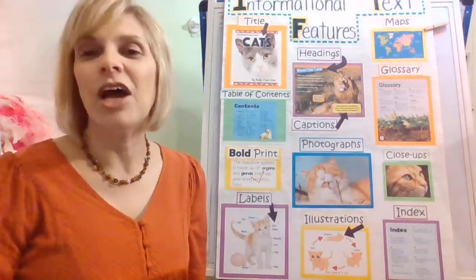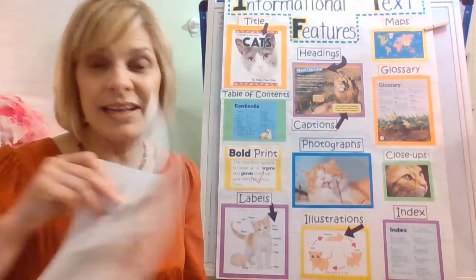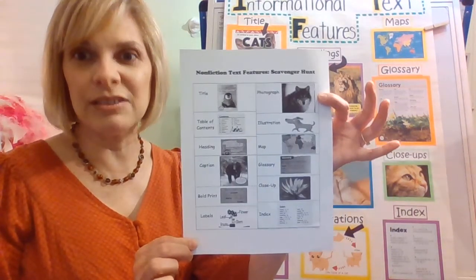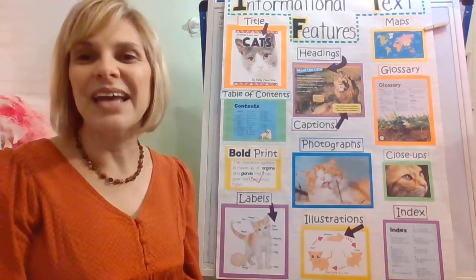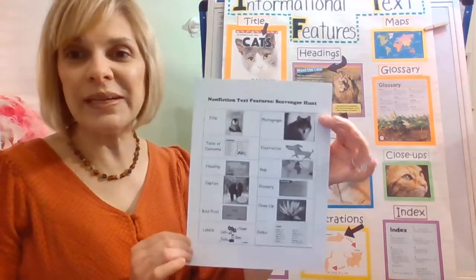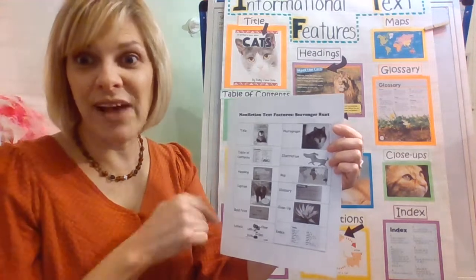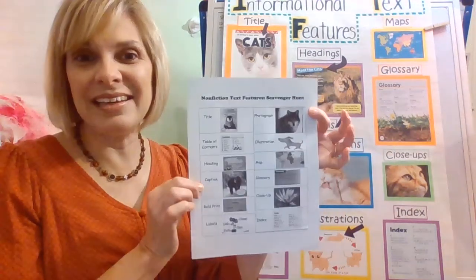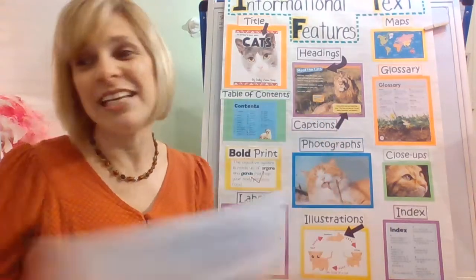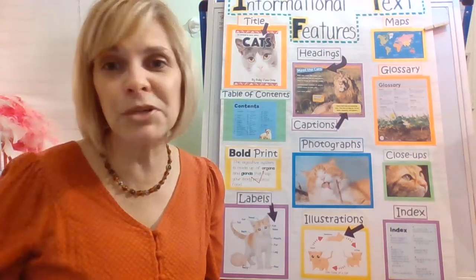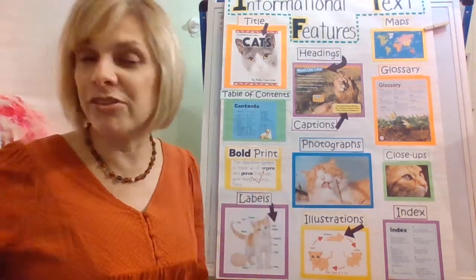Okay, are you ready for the scavenger hunt? If you'd like to pause, you can print out this page — I've attached it to the Seesaw activity. It's a little scavenger hunt. You can go get a pencil. Now if you have it, as I'm reading the book you can circle the feature when we find it. At the end, you'll see if the book has all the features I talked about today. Remember, nonfiction books don't always have all these things — these are just a lot of different things that lots of books use.